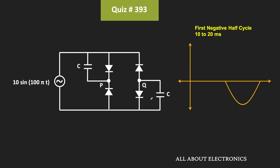That means during the positive half cycle, all four diodes will remain off. Now let us see how the circuit behaves during the negative half cycle. During the negative half cycle, this terminal becomes negative and this terminal becomes positive. Since the anode is now more positive than the cathode, the bottom diode turns on and current starts flowing. The upper diode remains off because current cannot flow in that direction. In this condition, current flows through the capacitor, and due to that this capacitor will charge up to the peak voltage of 10V.